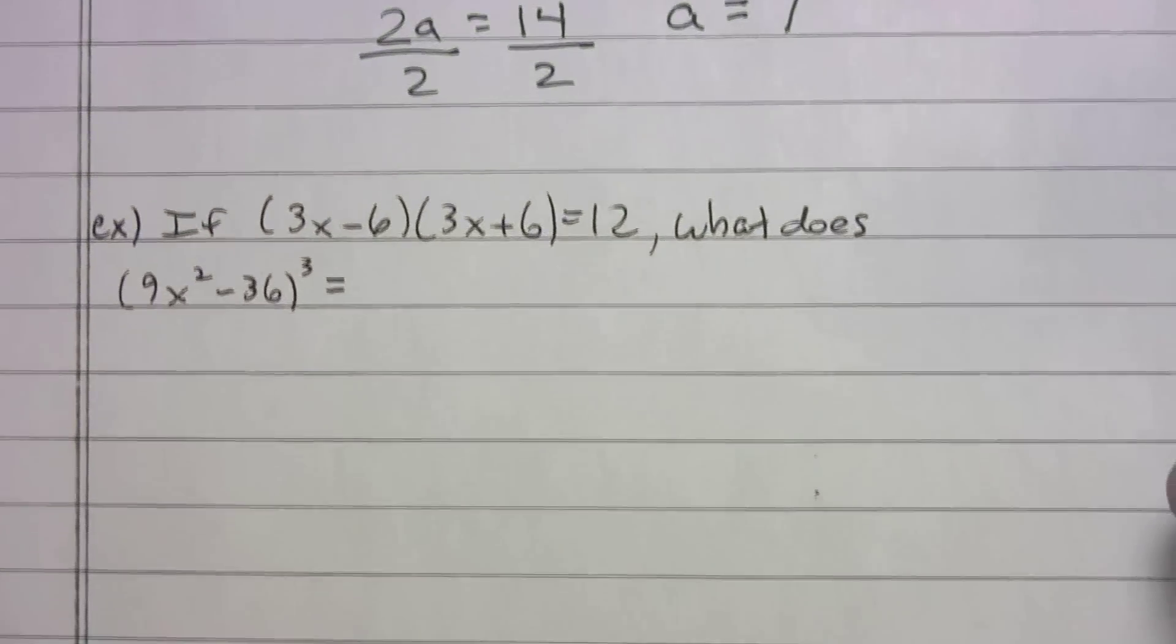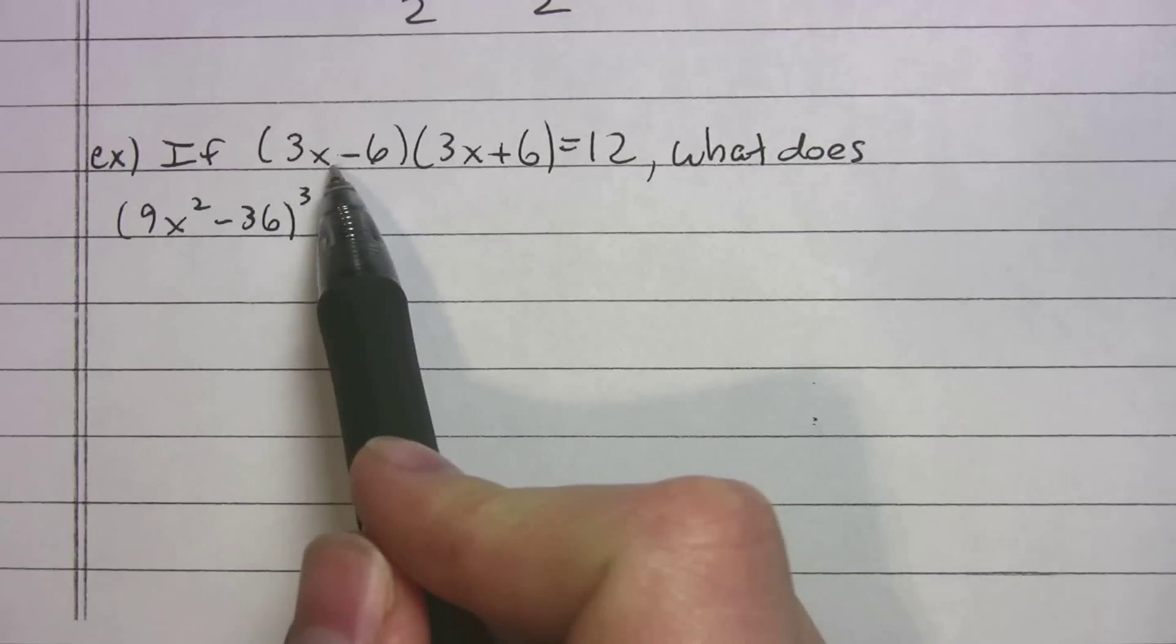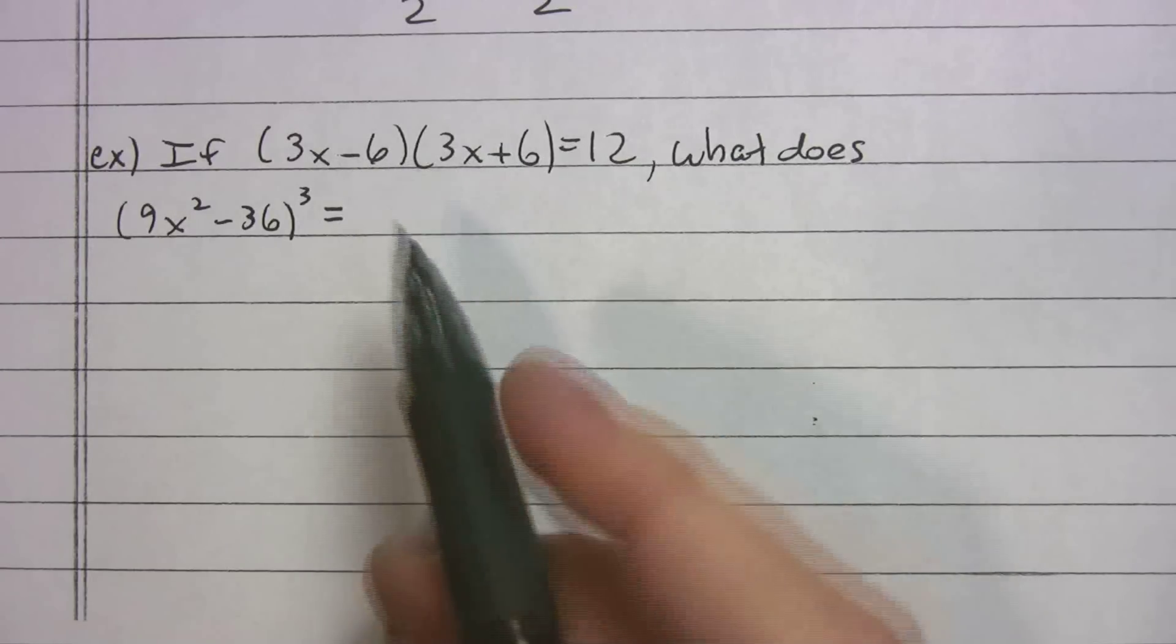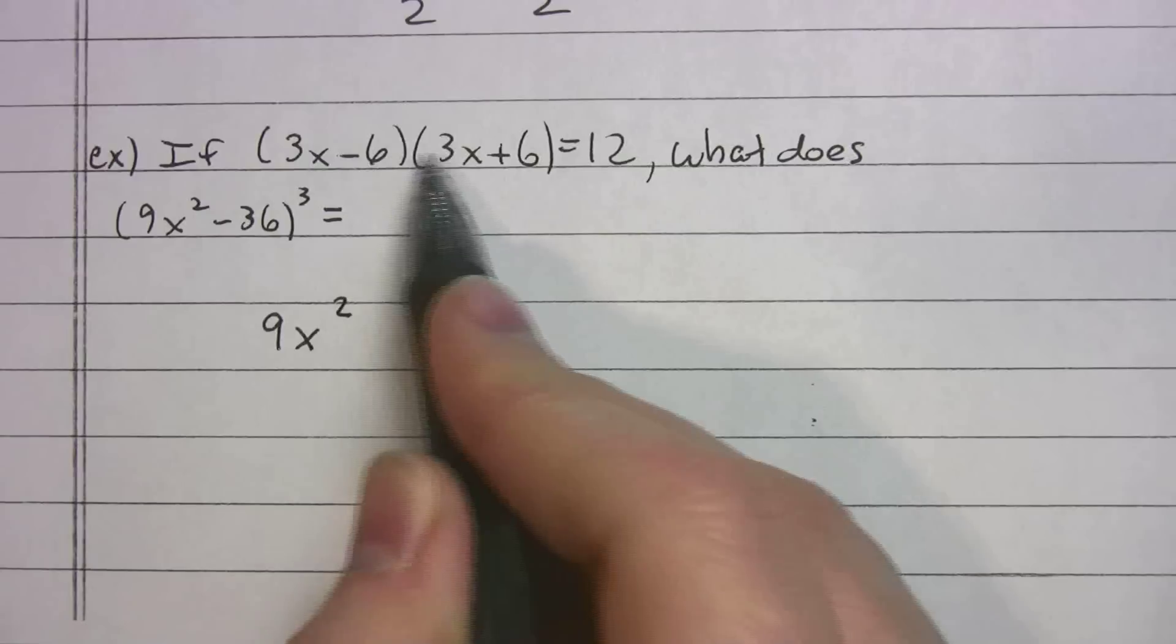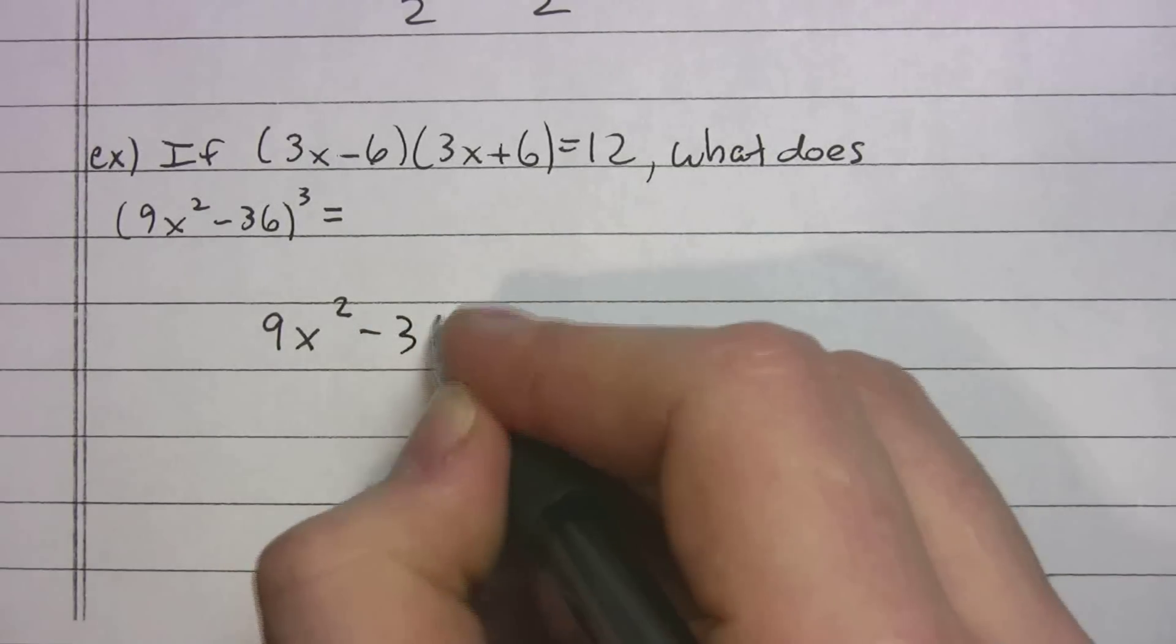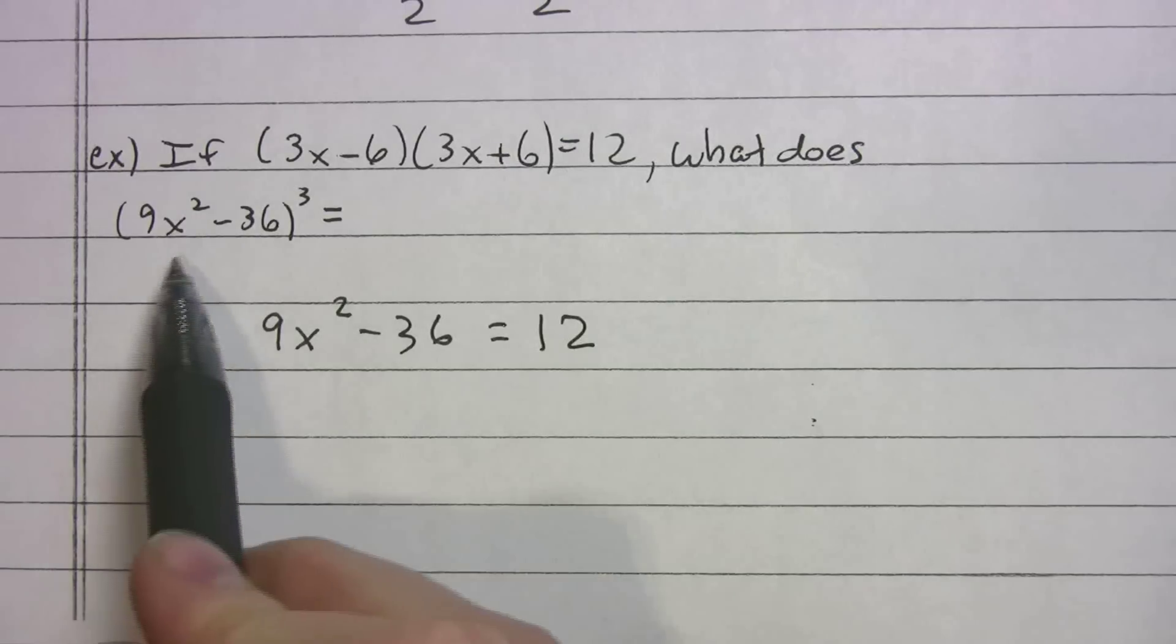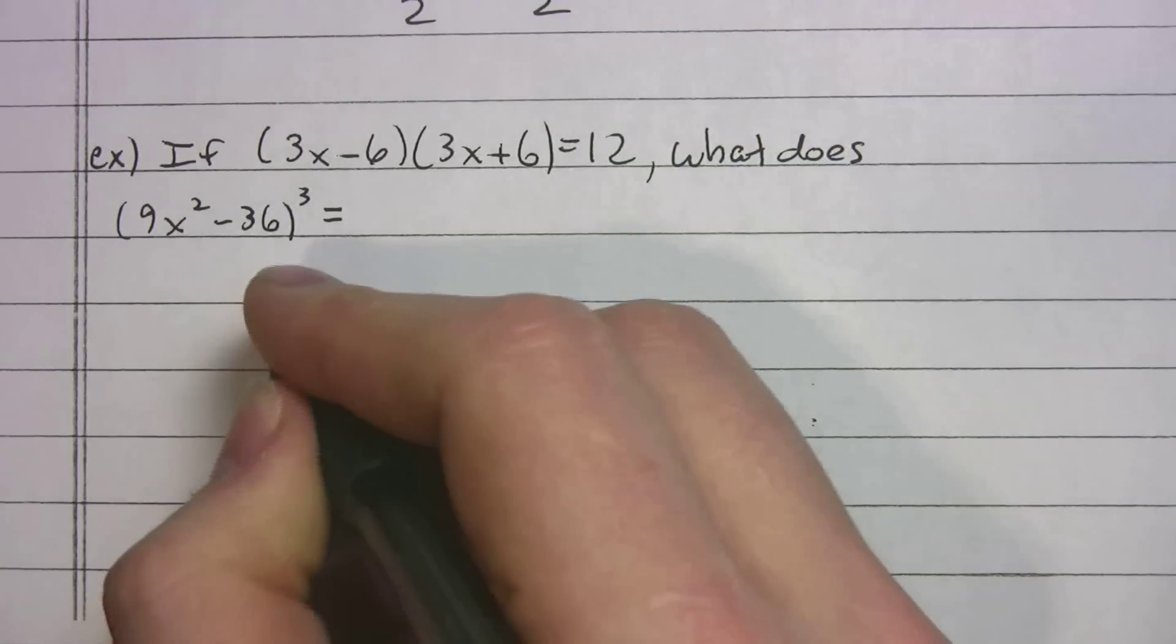Finally, we're going to end here. We'll probably end with the skin of our teeth here. If 3x minus 6 times 3x plus 6 equals 12, what does 9x squared minus 36 cubed equal? Well, we should know when we see this, this is the difference of two squares. So when I foil that out, what do you know? First, 9x squared, the inner and the outer cross out, we get minus 36. That whole thing is going to equal 12. Well, what do we have there? 9x squared minus 36, but it's to the third power.